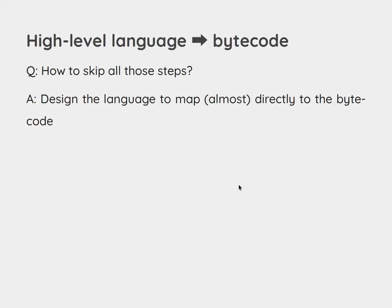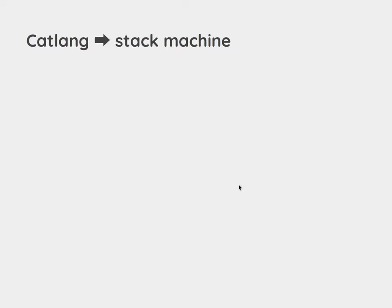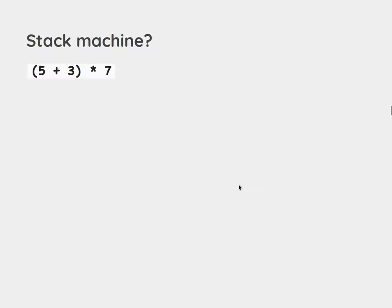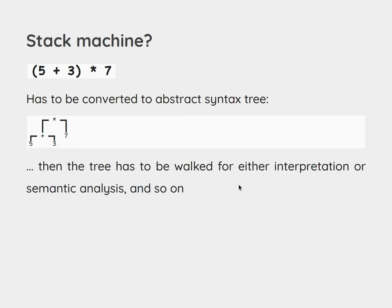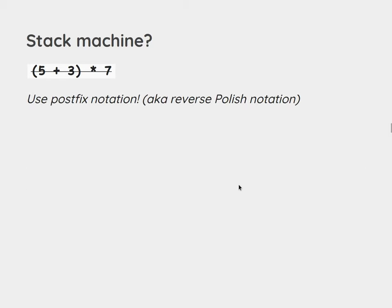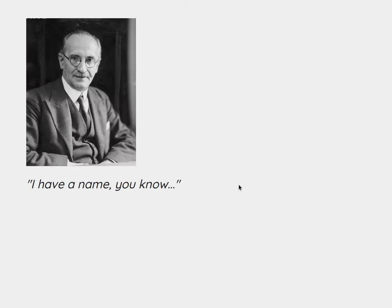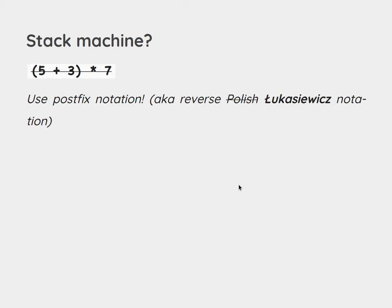The best way is to design the language in such a way that it maps almost directly to the bytecode. This high-level language to bytecode is basically cat-lang — a concatenative language to a stack machine. You may be wondering, what's a stack machine? Well, let's take a look at this very basic mathematical expression. If you want to interpret this on a computer, you have to make an abstract syntax tree, and then this tree has to be walked, or interpreted, or you have to do syntactic analysis. So let's not do that. We're going to use postfix notation, also called reverse-Polish notation, or actually it should be called Łukasiewicz notation — the logic mathematician invented this notation.